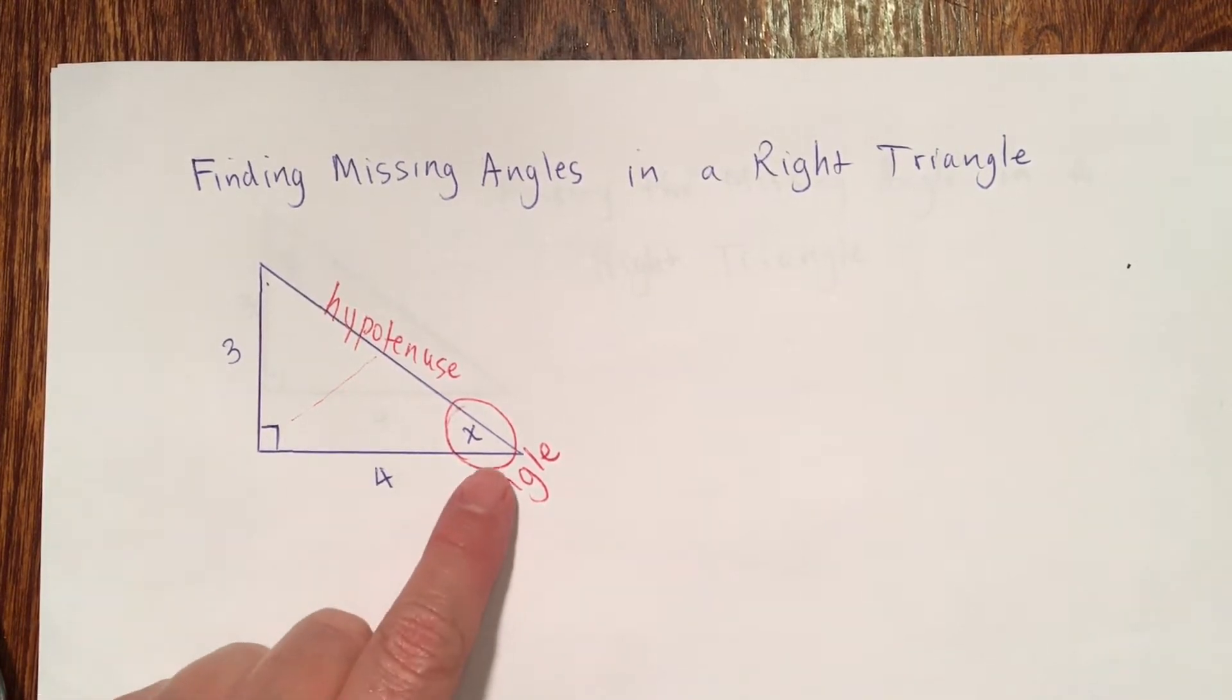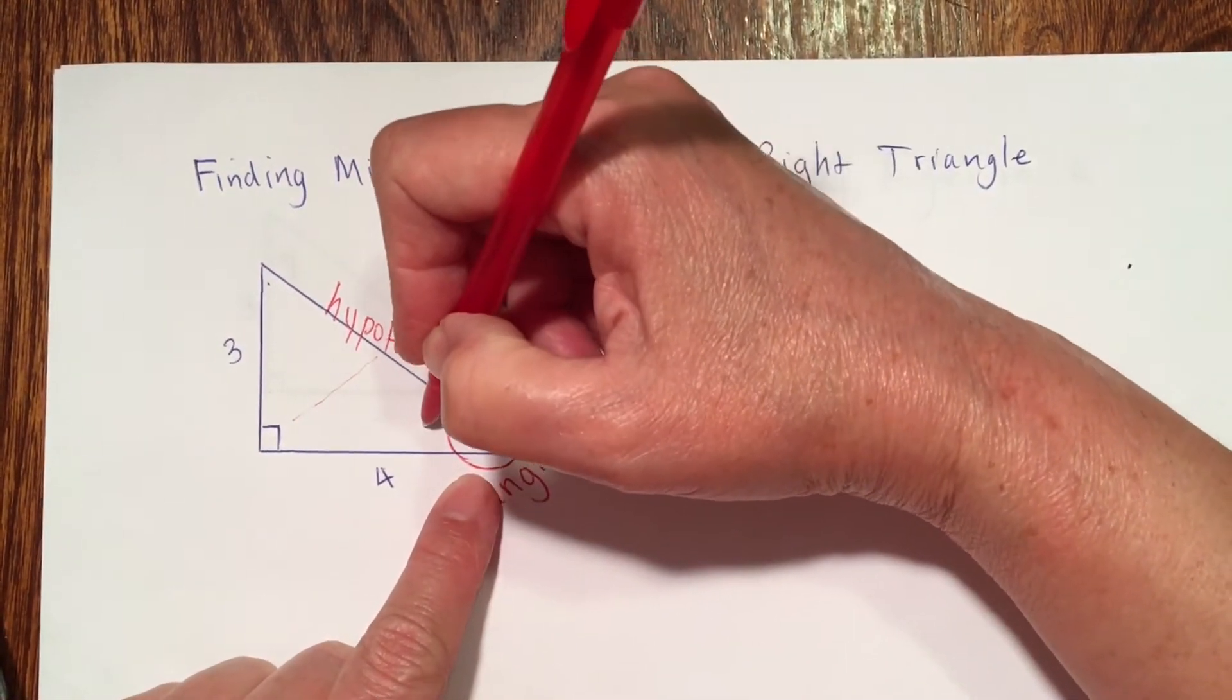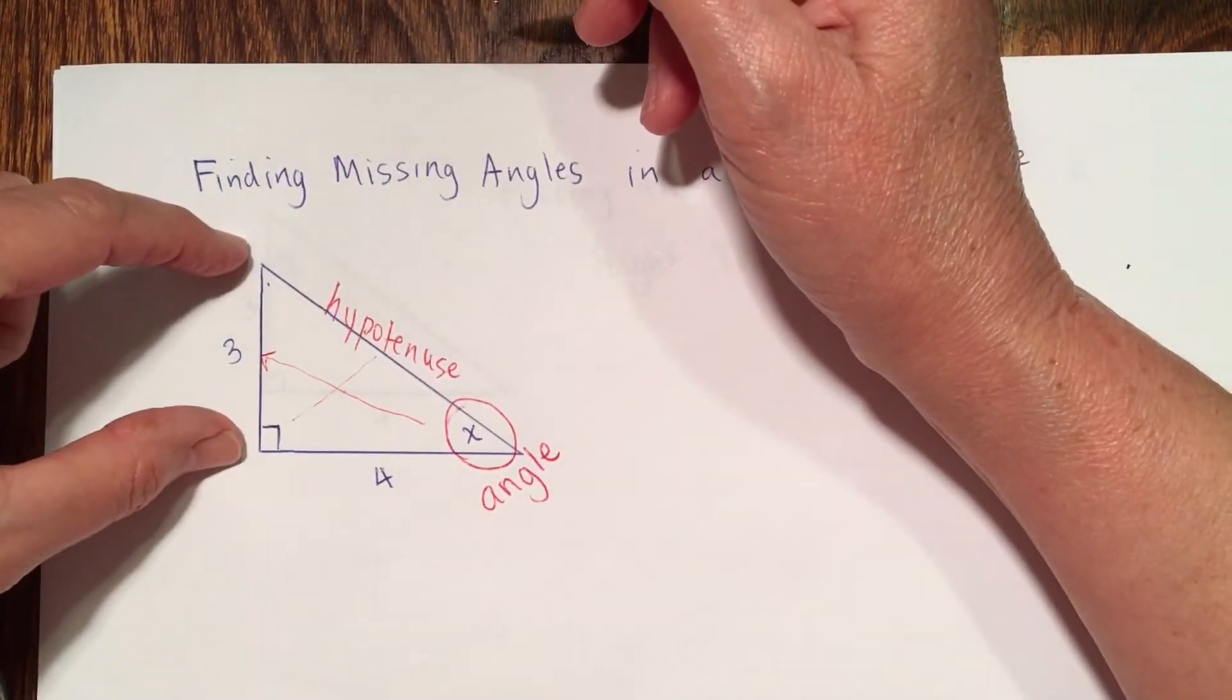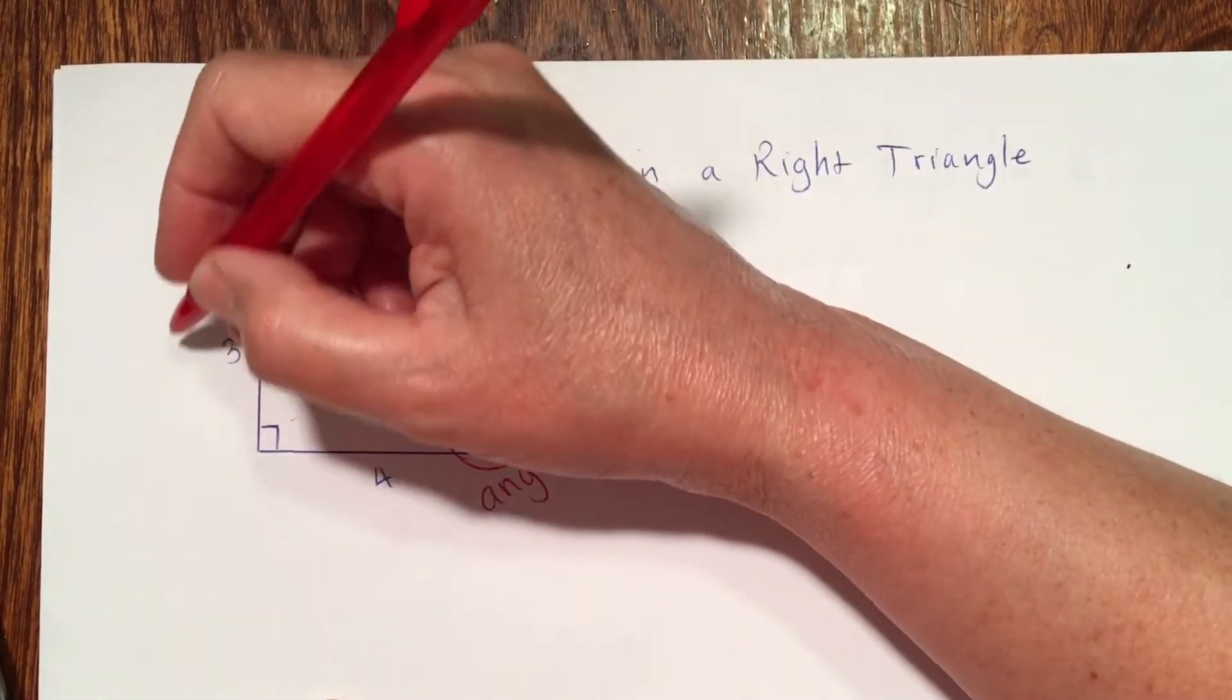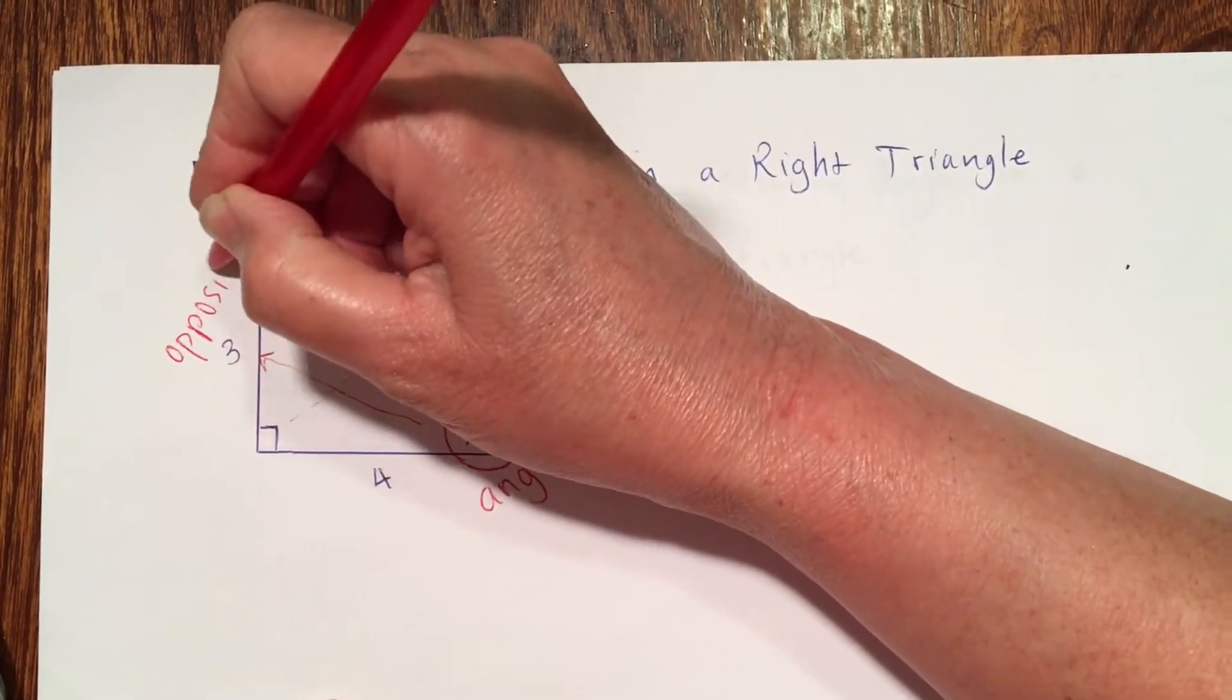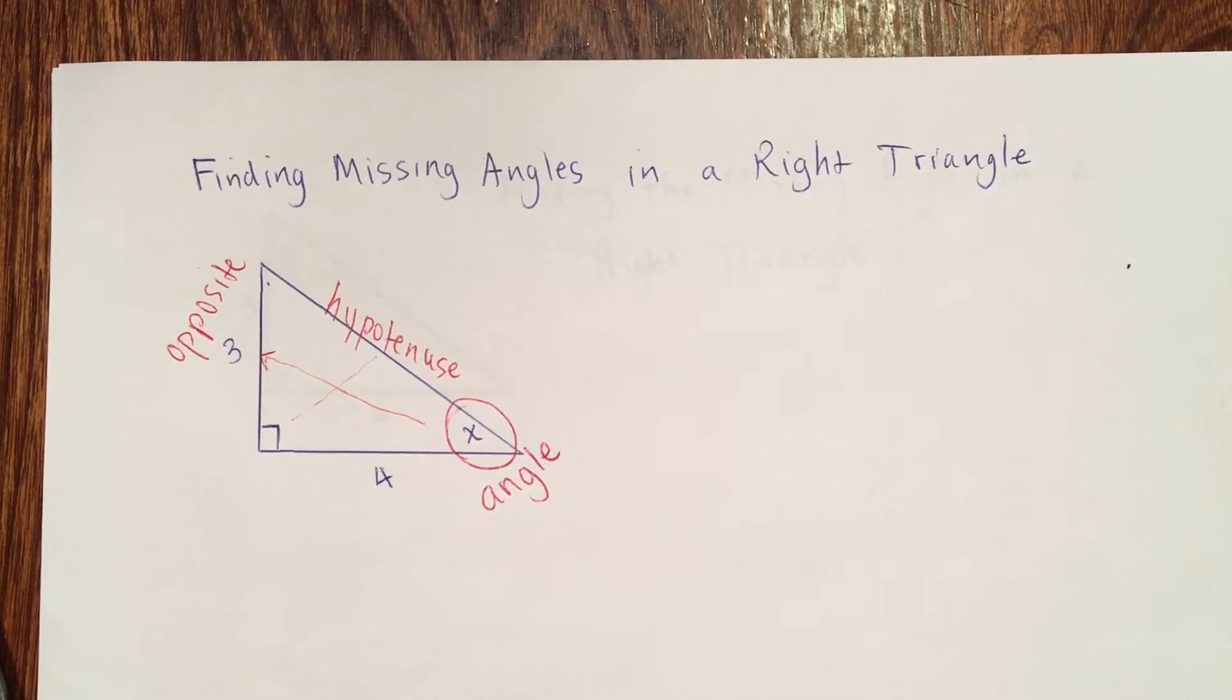They're asking me to find the measure of angle x. As I'm looking at angle x and I go across the triangle, 3. The side opposite from x has a length of 3. That side is the opposite side because we're looking and figuring it from x.